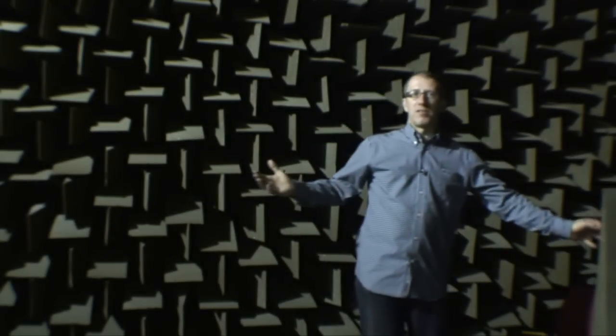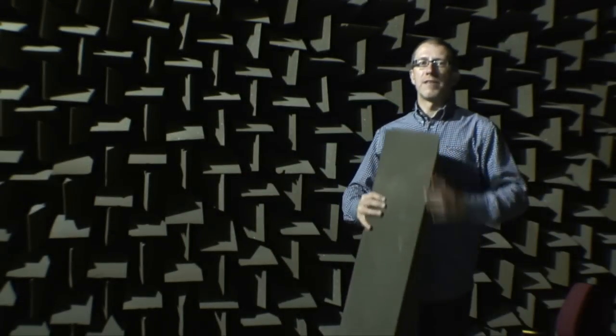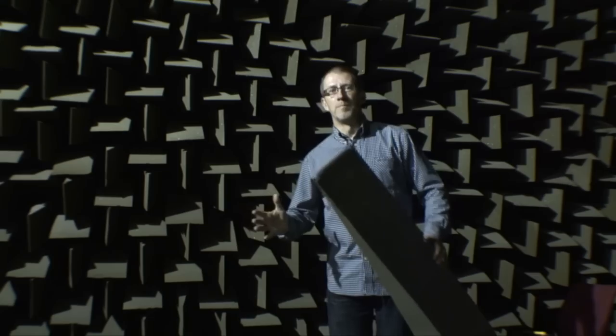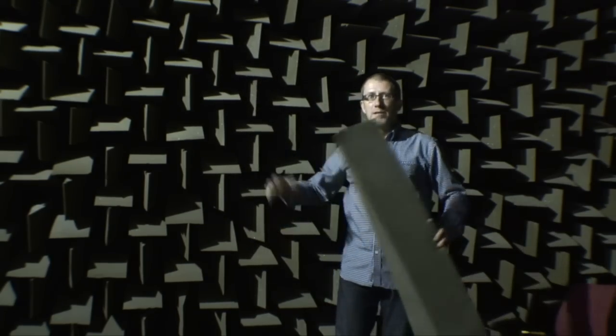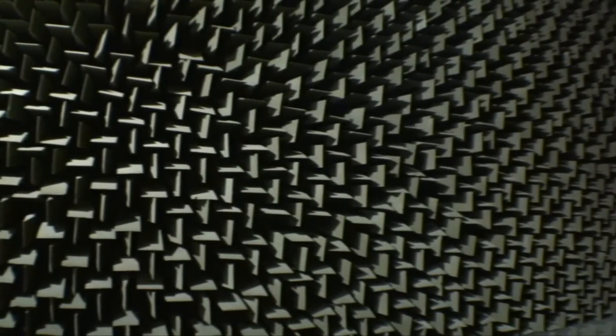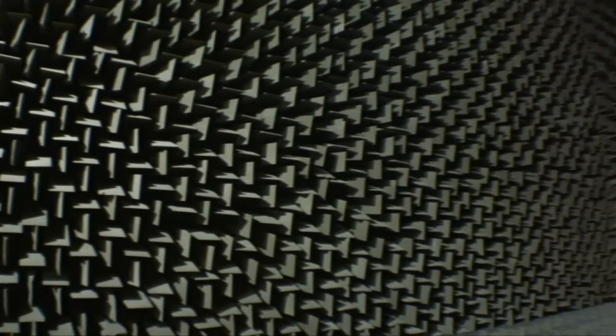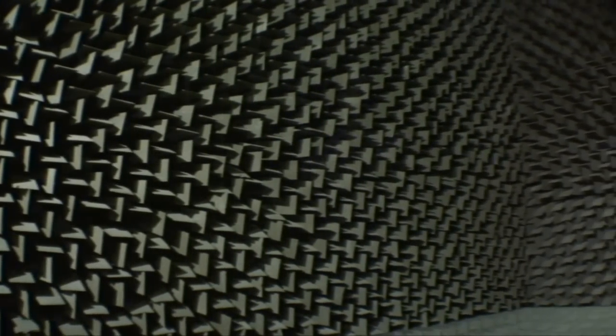But if you like, this space is the audio equivalent of that completely dark matte black room. What we've got here, the walls and the ceiling and the floor beneath this sprung floor, are completely covered in hundreds of wedges like this foam sponge wedges about 1.2 meters long.